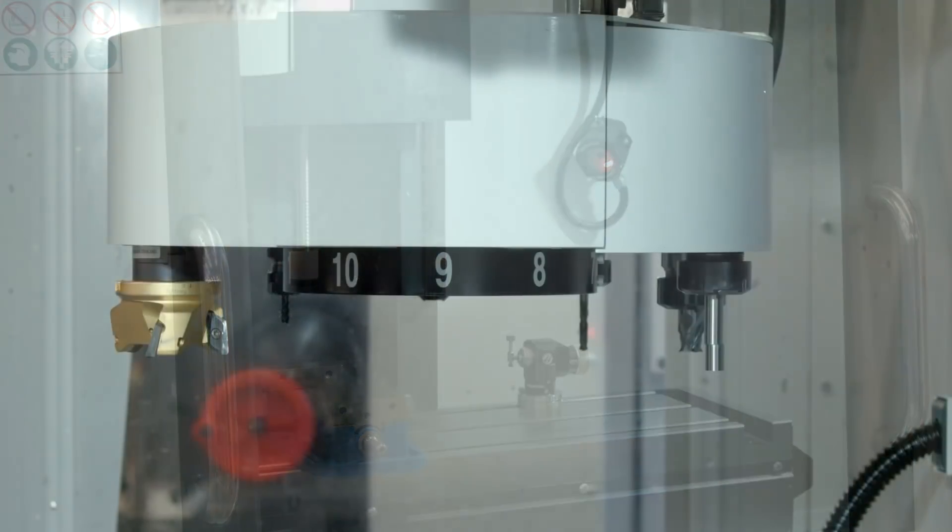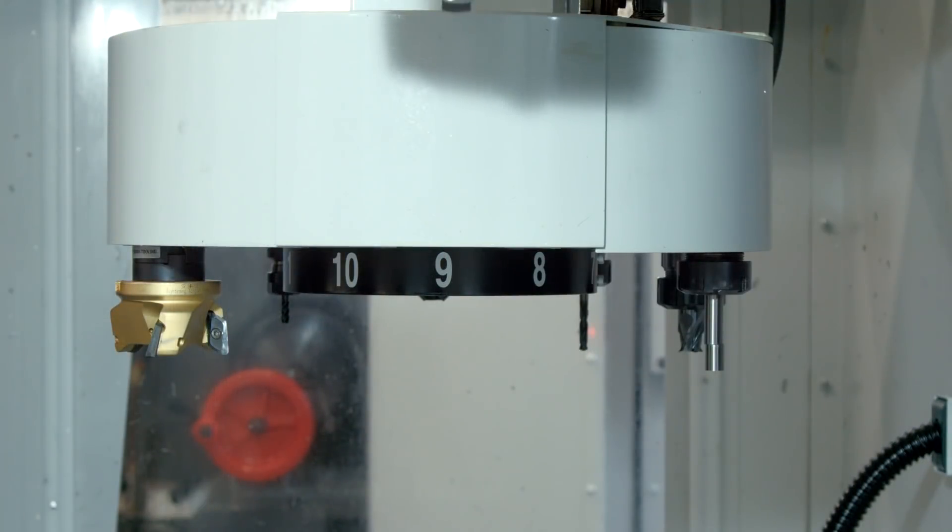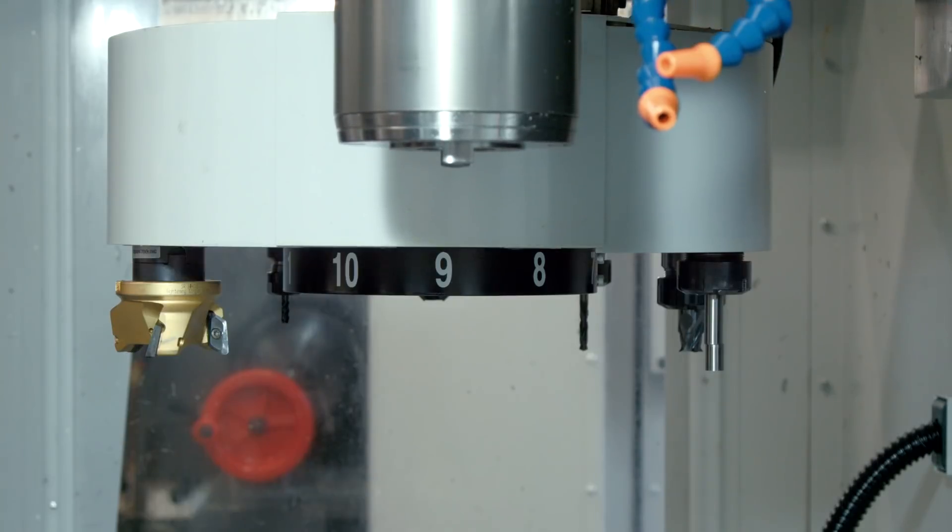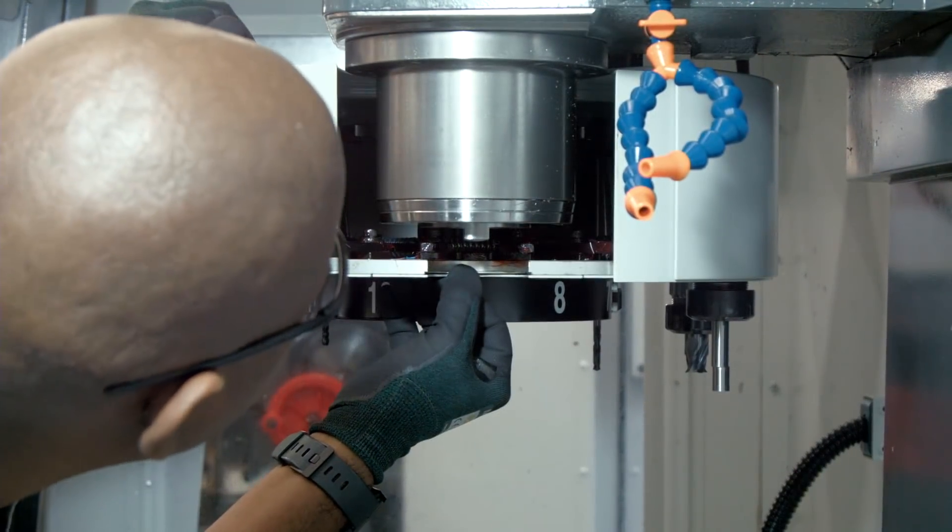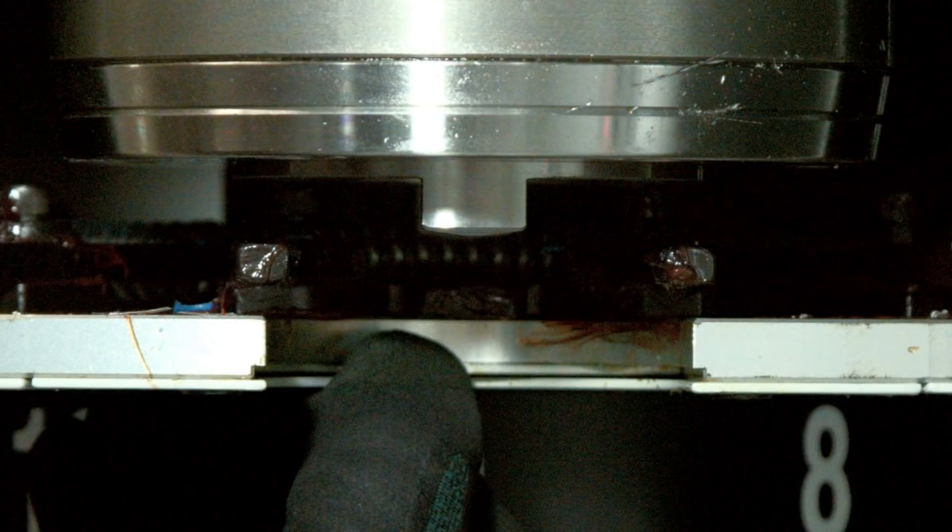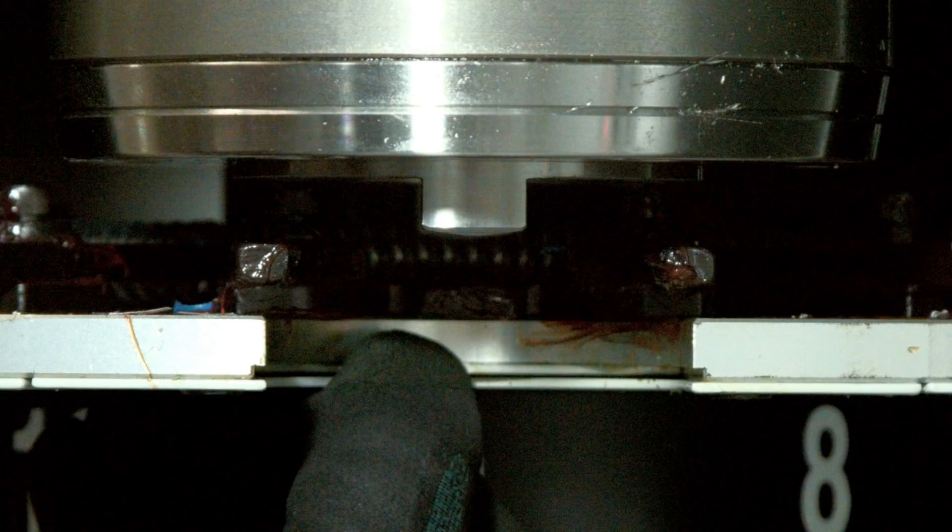Set the rapids to 25% and test the spindle orientation by commanding the tool change and pressing feed hold once the carousel is under the spindle. Check the drive dogs alignment with the extractor key on the carousel. It should be perfectly aligned.